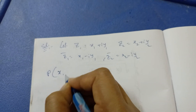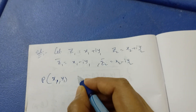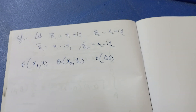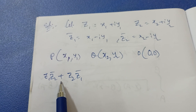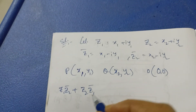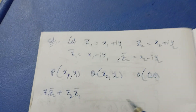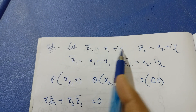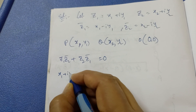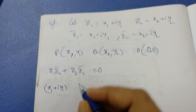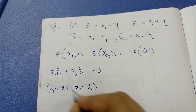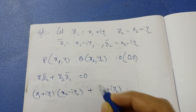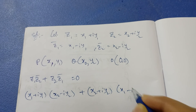Let point P be (x1, y1), point Q be (x2, y2), and the origin O be (0, 0). Given z1·z2̄ + z1̄·z2 = 0, I am taking the LHS and applying the values: z1 = x1 + iy1, z2̄ = x2 − iy2, z1̄ = x1 − iy1.